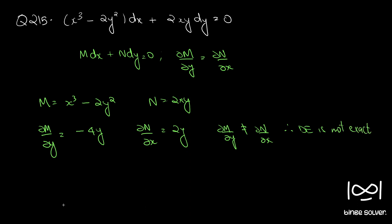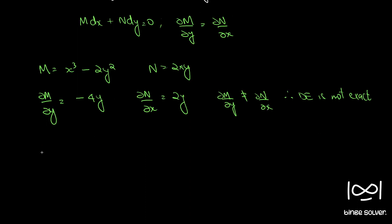So we need to find an integrating factor. Observing the differential equation, we can see rules 1, 2, and 3 don't apply here. For rule 4, we first take the difference ∂M/∂y minus ∂N/∂x. So ∂M/∂y minus ∂N/∂x is minus 4y minus 2y, which is minus 6y.